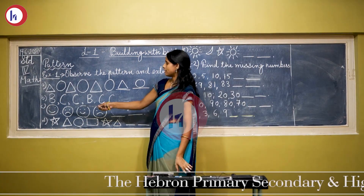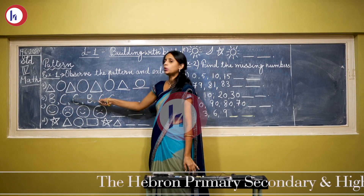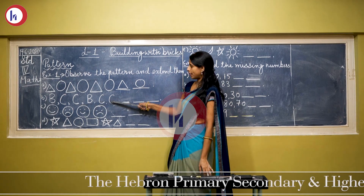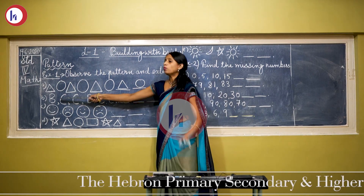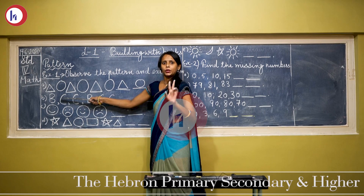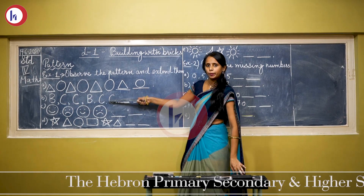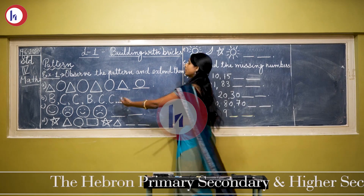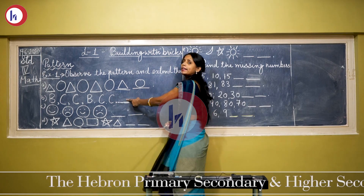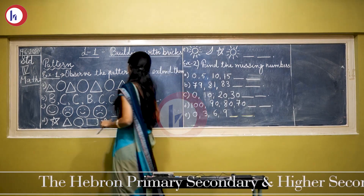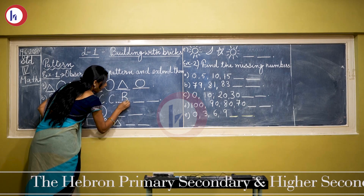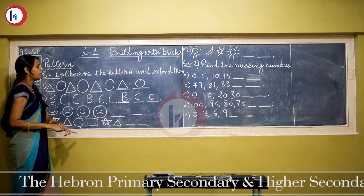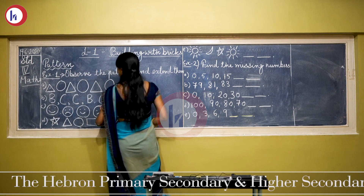Now come to the next: B and 2 times C. Again B and 2 times C. Here the pattern is 1 time B and 2 times C, and this process is repeating. The last letter here is C, so after C, which letter will come? B — 1 time B and 2 times C. In this way, we can complete this sequence.